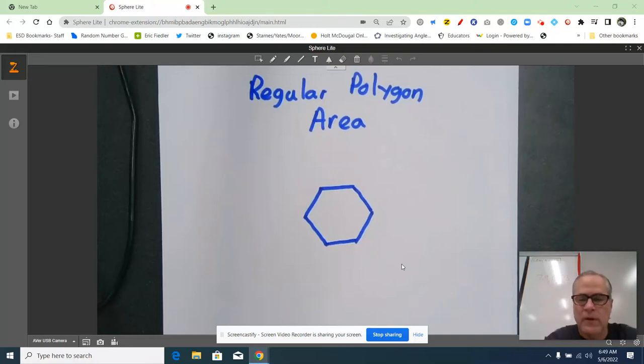Hey everybody, this last part of this section is how to find the area of a regular polygon. Here I have a hexagon. Remember, a regular polygon means all the sides are the same and all the angles are the same. In this video, I just want to share the formula that we use to find it and some vocabulary for different pieces of this problem.